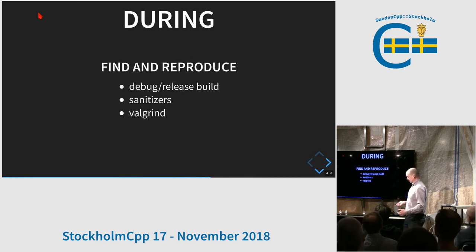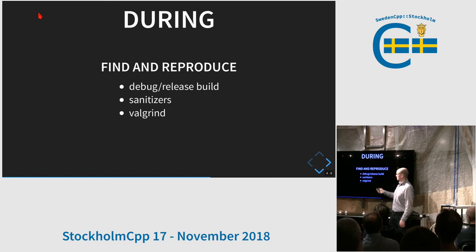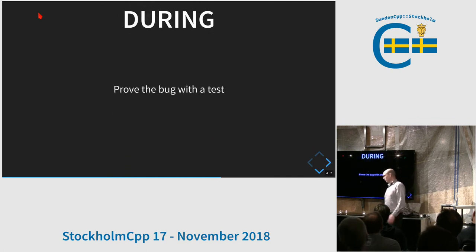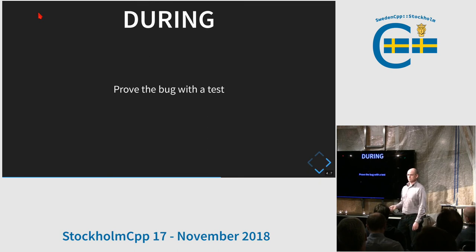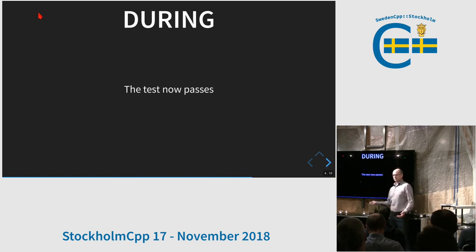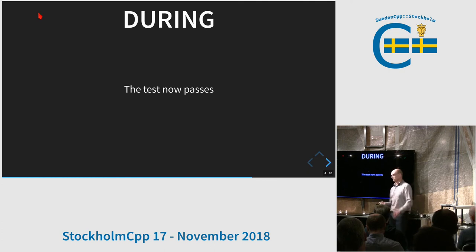To start debugging, first do the easy things: rebuild with the sanitizers, try the debug build, try the release build. This is usually pretty fast and gives you a clue what to look for. Once you find the bug, prove it with a test so you know you can trigger it. Commit the failing test, fix the bug, and the test now passes. This proves to your teammates and the reviewer that you understood the bug, you have fixed it, and it will never appear again — at least not in this form.